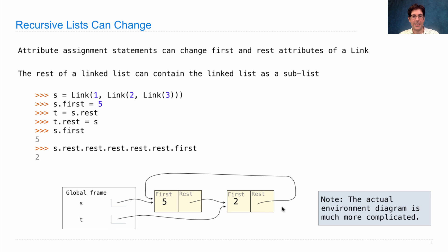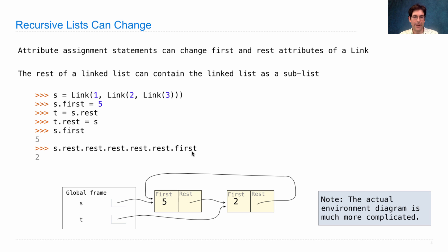That cycle was in t and it was in s. So t is now the list that starts with 2, then 5, then 2, then 5, repeating. And s is the list that starts with 5, then 2, then 5, then 2, et cetera. So if I get the rest of the rest of the rest of the rest of the rest of the rest of s, I end up at the list starting with 2, and I get the first element of that, which gives me the number 2.